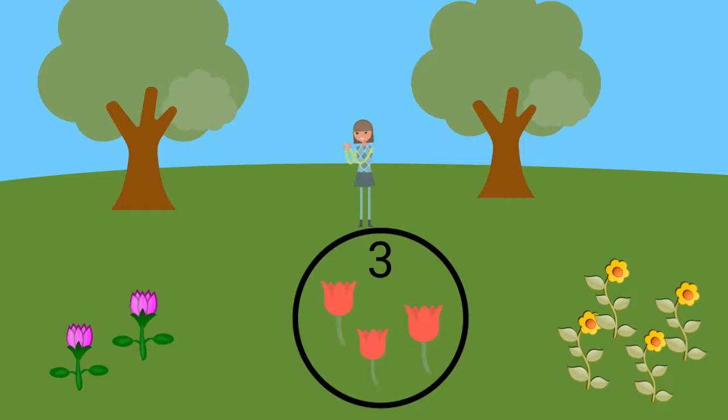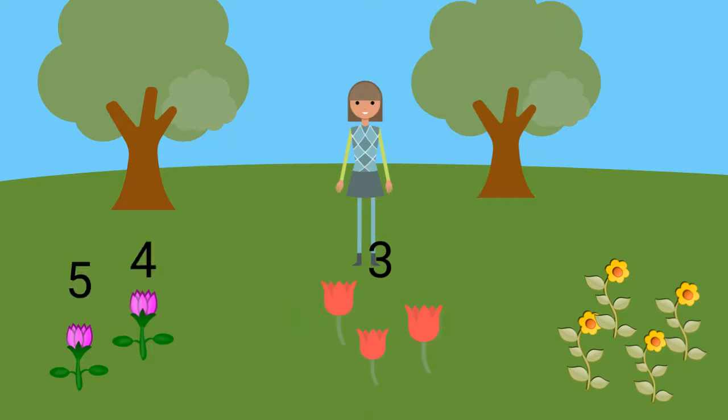We know we have three red flowers, so we will count up from three as we add the purple. Ready? 3, 4, 5. Excellent! You just found the sum of 3 plus 2.